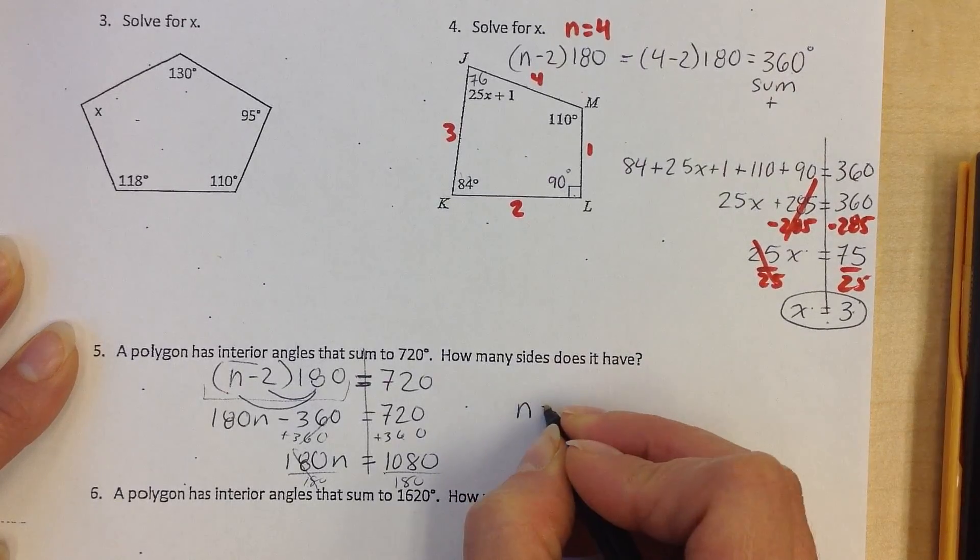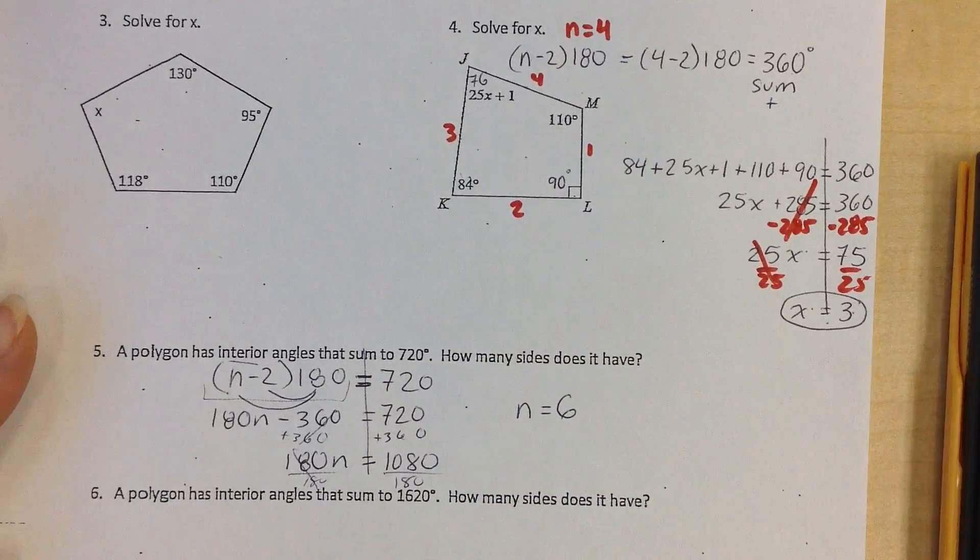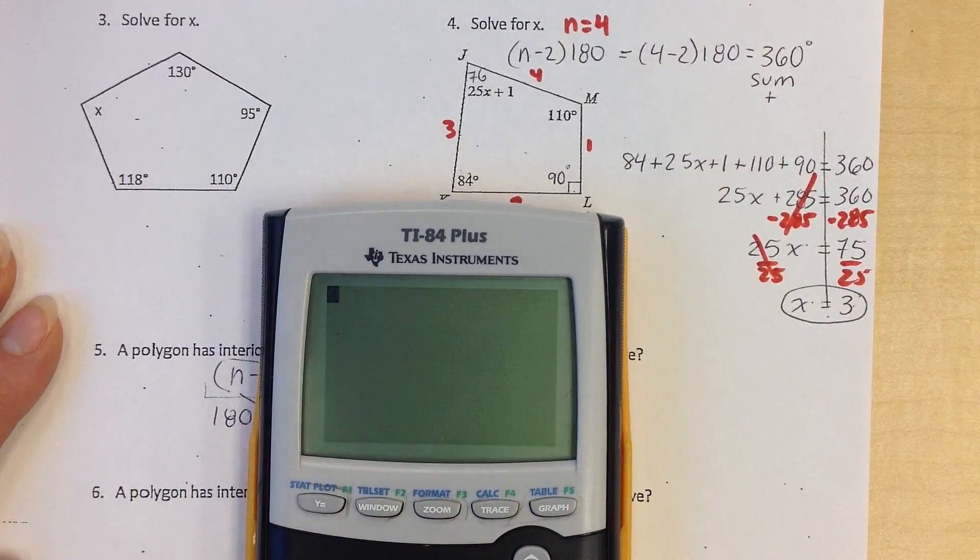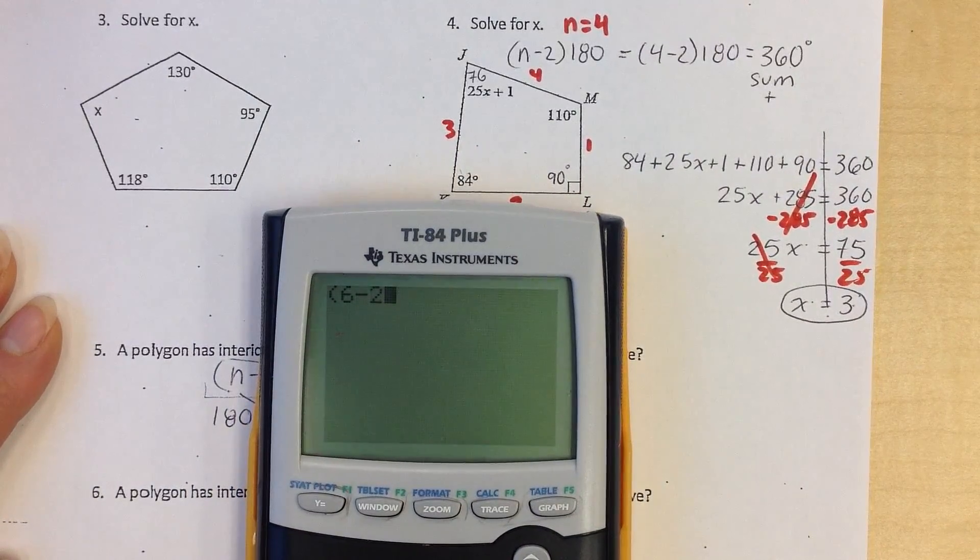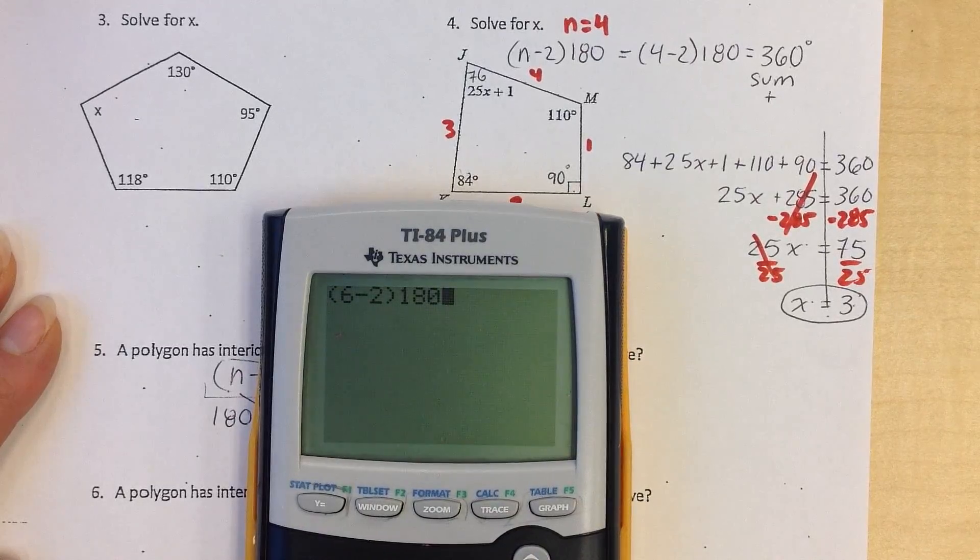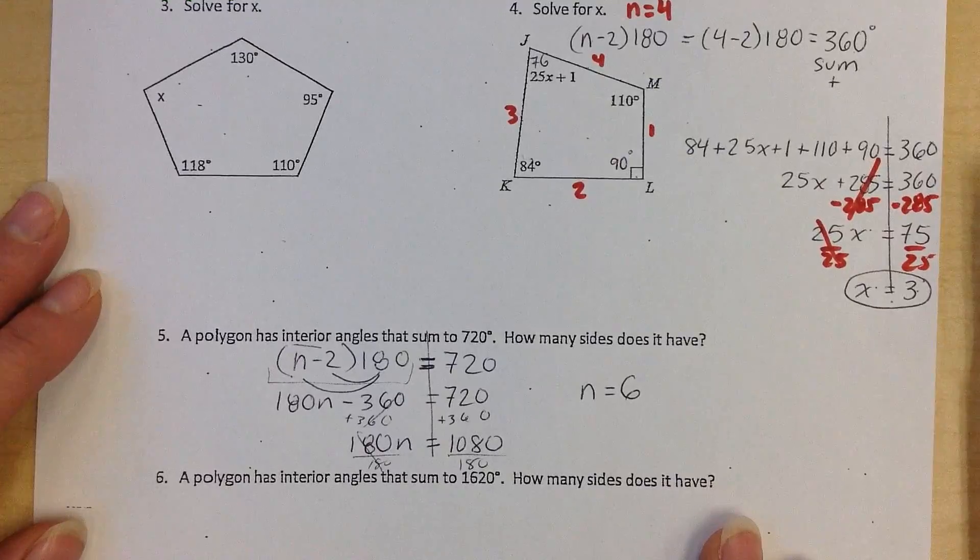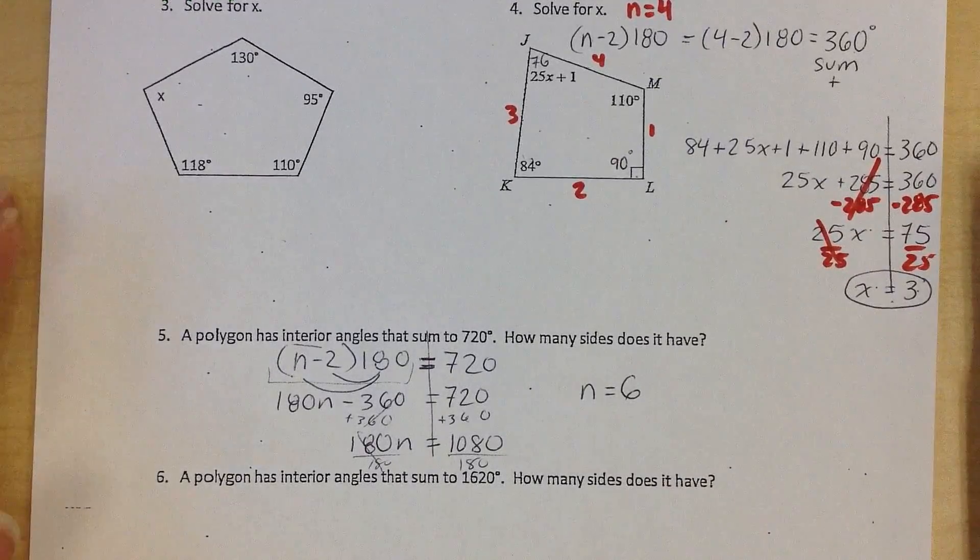And I get n is 6. Okay, and if I'm unsure, I can always go back and check that. Interior angle sum is my number of sides 6. 6 minus 2, times 180. Oh, yep, 720. So I did that right. Okay? Alright, try the rest of the problems on page 8.